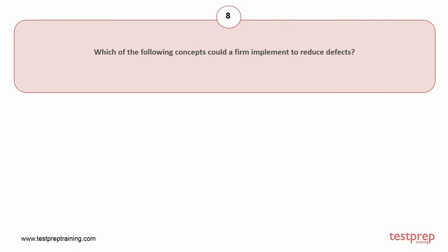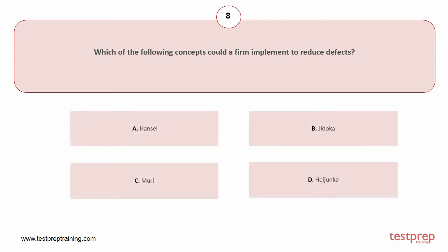Question number eight: Which of the following concepts could a firm implement to reduce defects? Your options are: A) Hansei, B) Jidoka, C) Mori, D) Heijunka. The correct answer is option B.